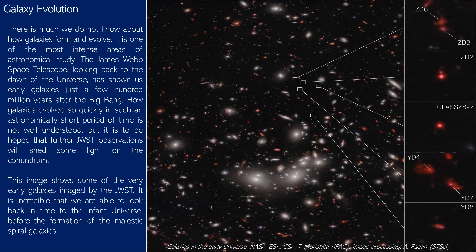There is much we do not know about how galaxies form and evolve — it is one of the most intense areas of astronomical study. The James Webb Space Telescope, looking back to the dawn of the universe, has shown us early galaxies just a few hundred million years after the Big Bang. How galaxies evolved so quickly in such an astronomically short period of time is not well understood, but further JWST observations are hoped to shed light on the conundrum. It is incredible that we can look back in time to the infant universe, before the formation of the majestic spiral galaxies.